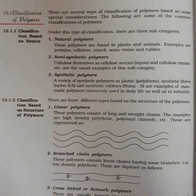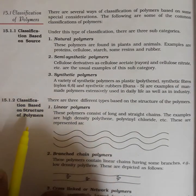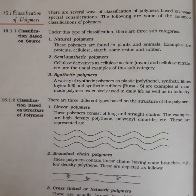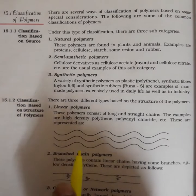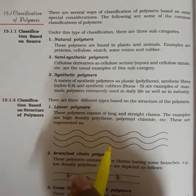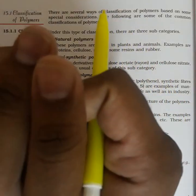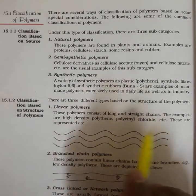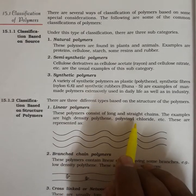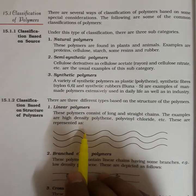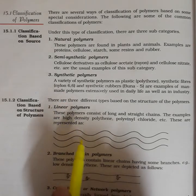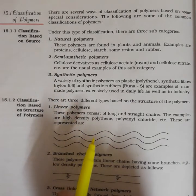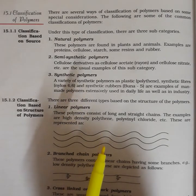Classification based on structure: polymers have three main structural types — linear, branched, and cross-linked. Linear polymers consist of long, straight chains and have stretchability as a main property. Examples include high-density polythene and polyvinyl chloride, which have very good stretchability properties.